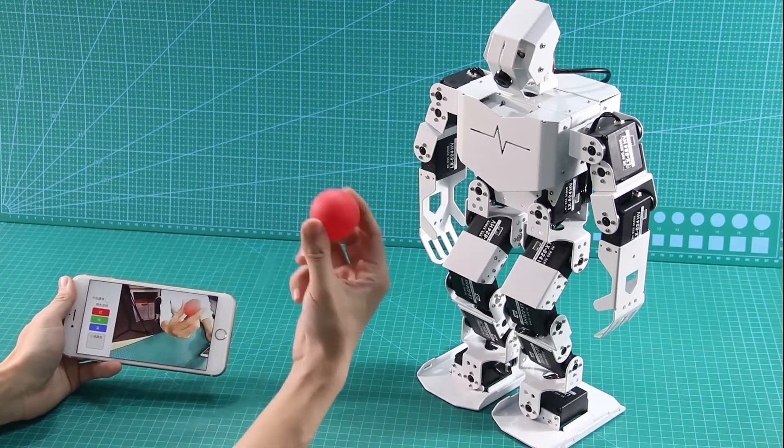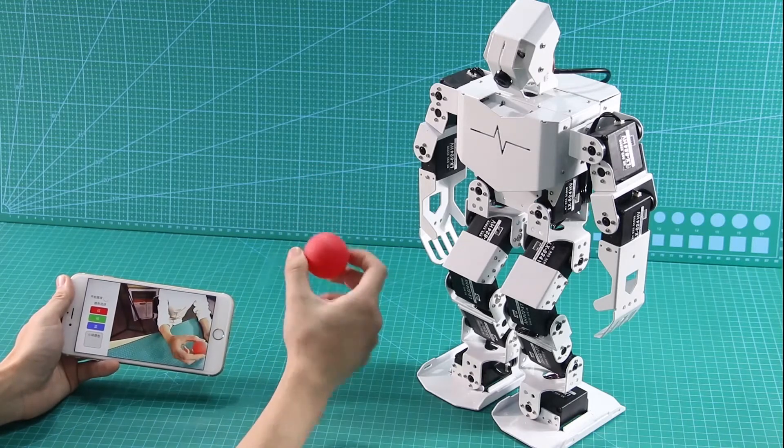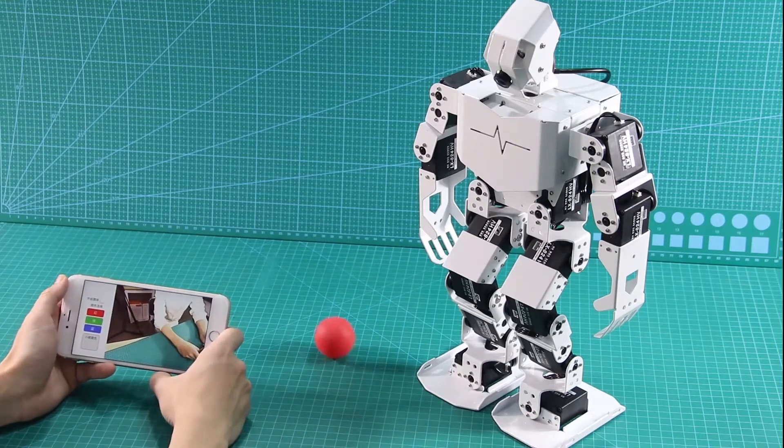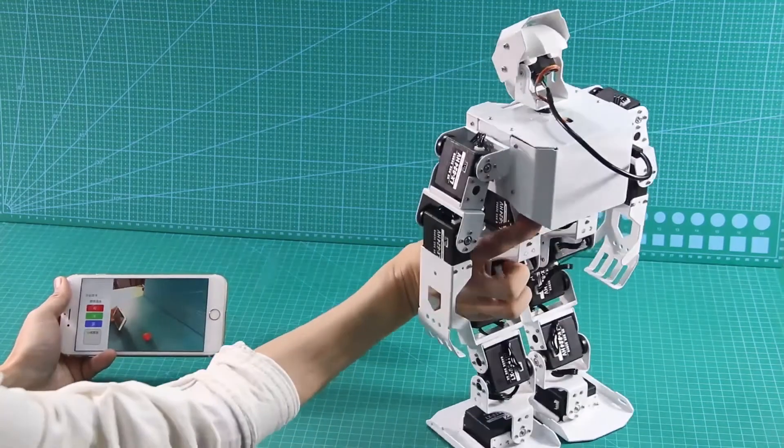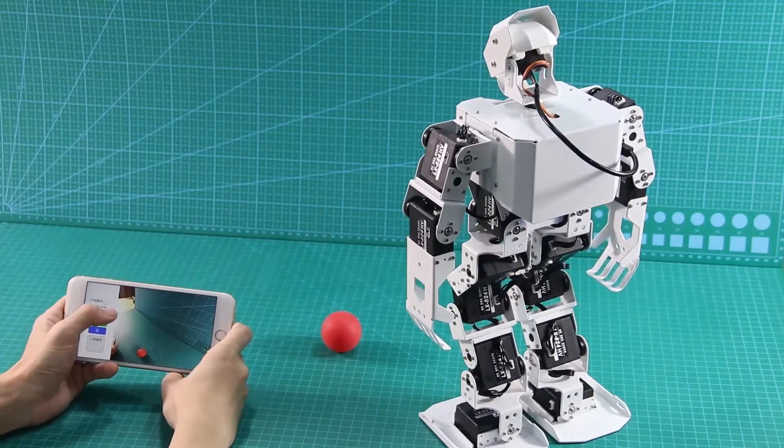In this video, we'll take the red color as an example. Adjust TonyPi's angle first, and then click Start Shoot and select red.